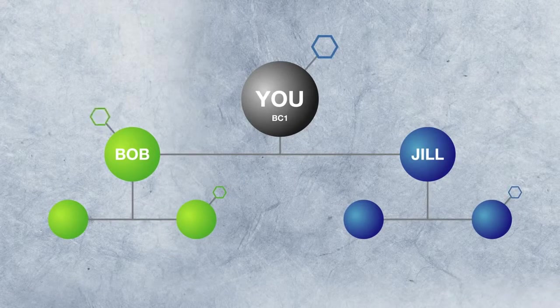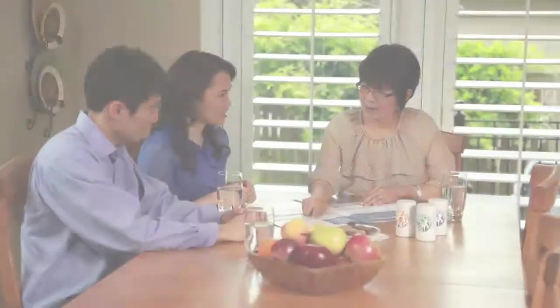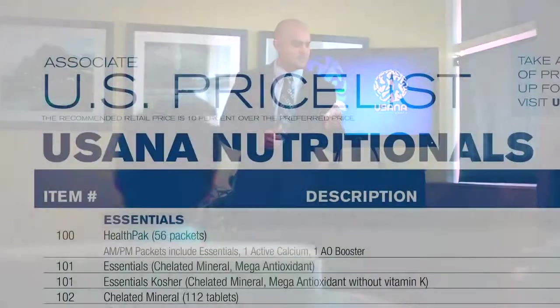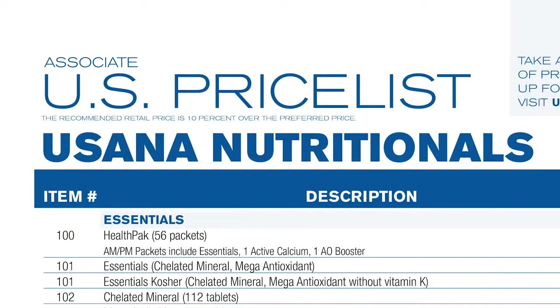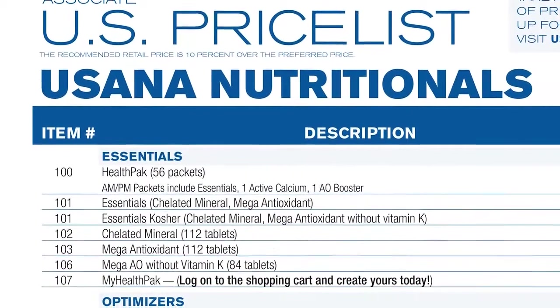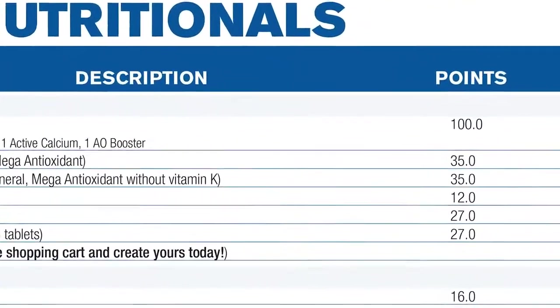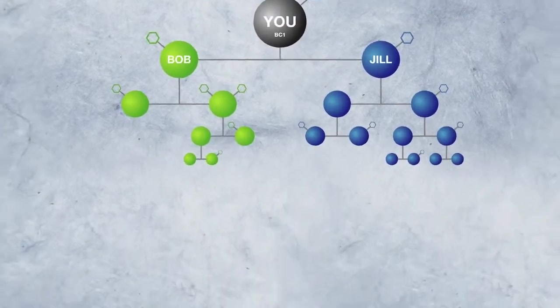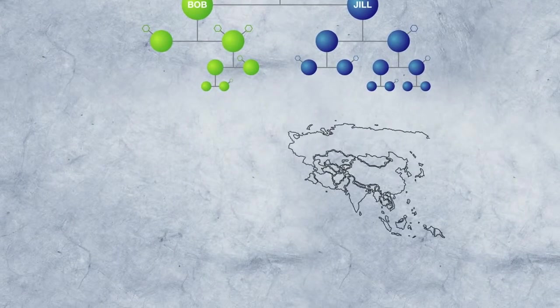When we talk about product and sales volume and getting paid commissions in USANA, we talk in terms of points instead of the currency you use in your country. Points are converted to local currency when people order products and when USANA pays commissions. The reason we use points is that USANA wants to make it easy for you to expand your business internationally.